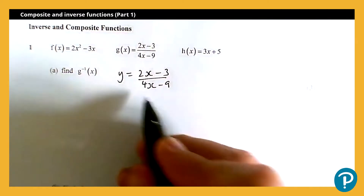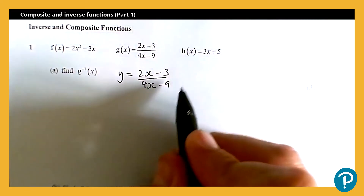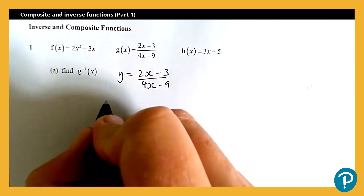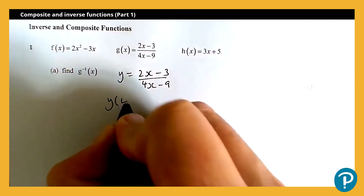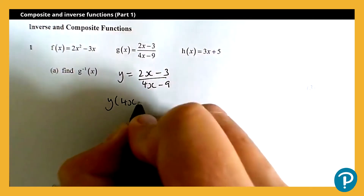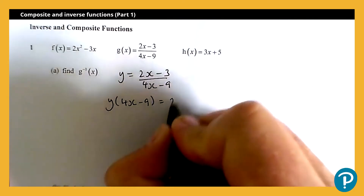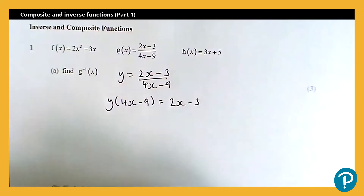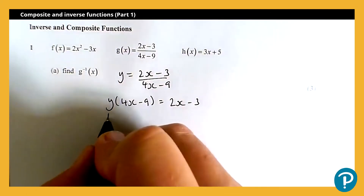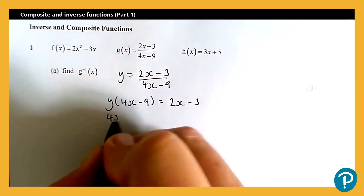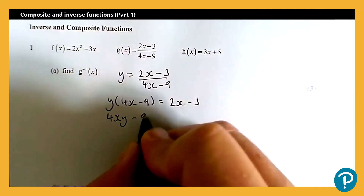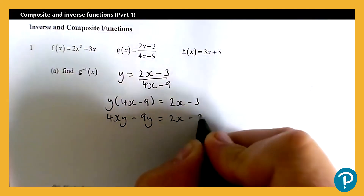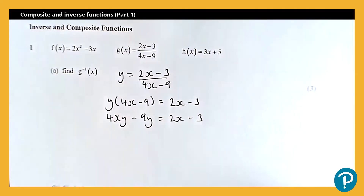The first step here is going to be multiplying by the denominator. So we're going to get y lots of 4x minus 9 is equal to 2x minus 3. Expanding the bracket, that will give me 4xy minus 9y is equal to 2x minus 3.